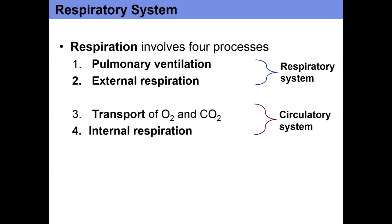Once we've increased the oxygen saturation of the blood — once hemoglobin is effectively full — we have to transport that oxygenated blood around the body. The transport of oxygen and carbon dioxide is the responsibility of the circulatory system, the heart and blood vessels. Then internal respiration: once we take that oxygenated blood to, say, a muscle fiber in the quadriceps, we drop off oxygen and the blood picks up carbon dioxide. That blood with lowered oxygen and increased CO2 returns to the heart and eventually back to the lungs, and we start the process all over again.